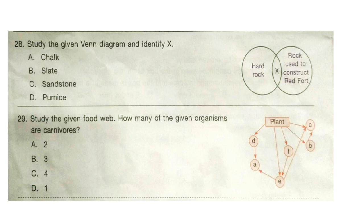Question 29: Study the given food web. How many of the given organisms are carnivores? The correct answer is option D — 1. Here only one organism is a carnivore animal.